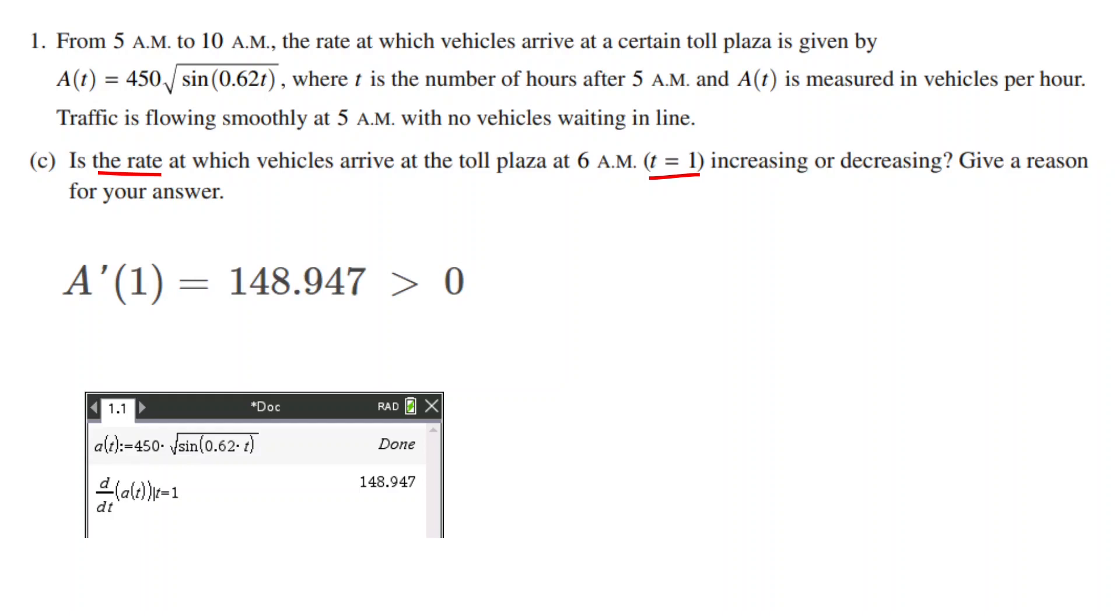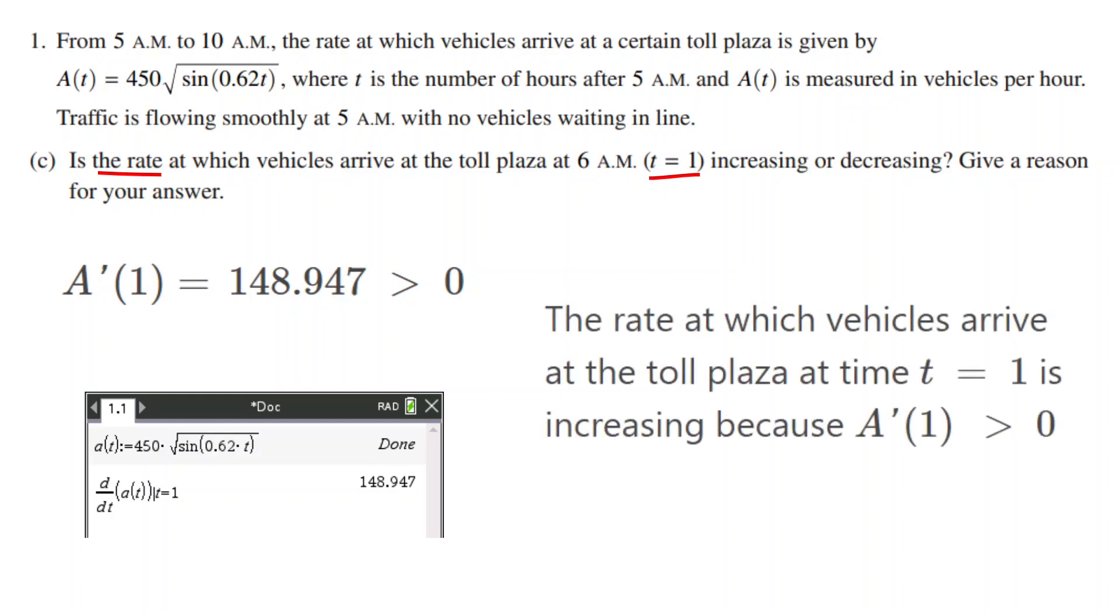Now we need to provide a reason, and we can say something similar to, the rate at which vehicles arrive at the toll plaza at time t equals 1 is increasing because A prime of 1 is greater than 0.